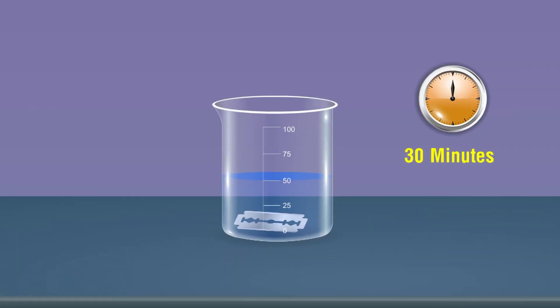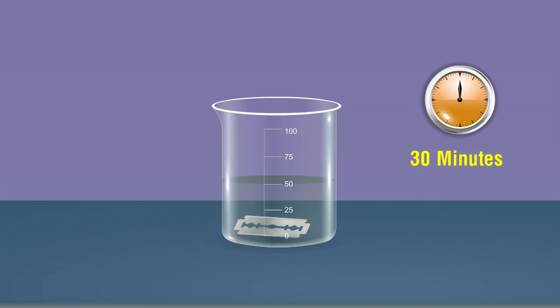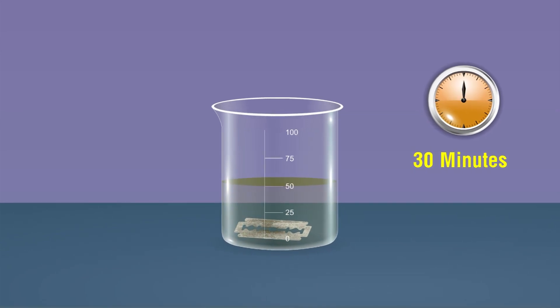Observations: The blue color solution of copper sulfate first fades and then changes to green, forming a brown deposit on the shaving blade.